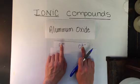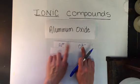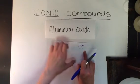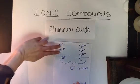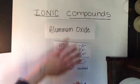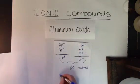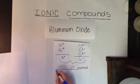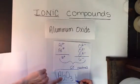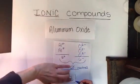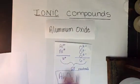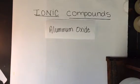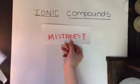How do I get six? I multiply this by two and multiply this by three. Therefore, two and three. Okay. How do I write the formula? Well, I need two Al's and three oxygens. Two Al's and three oxygens. Neutral, no charge. All right. So, that is the end of the lesson. But here are some common mistakes you don't want to make.